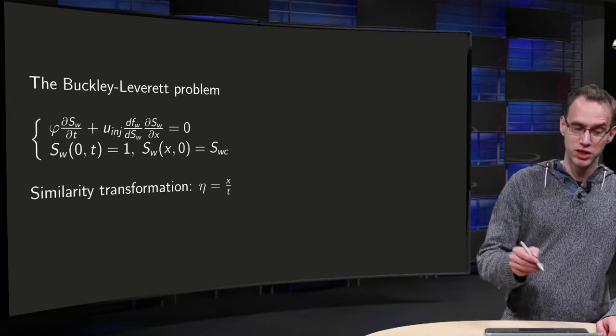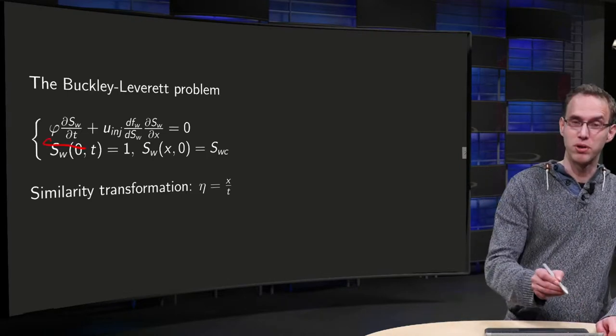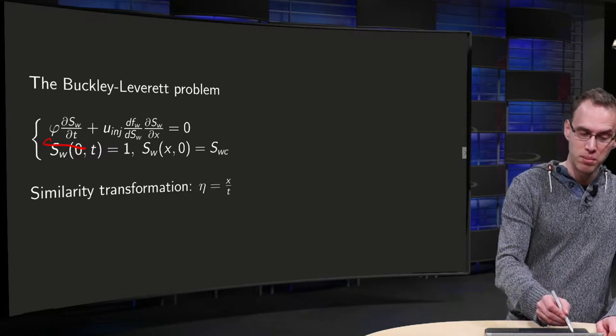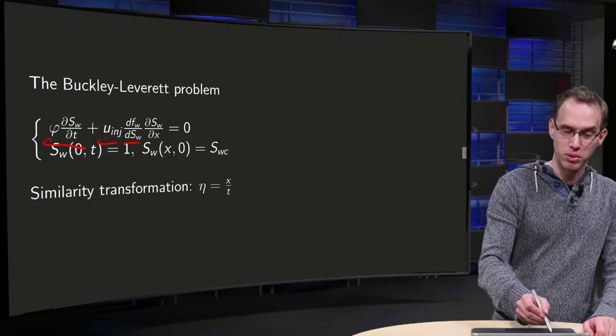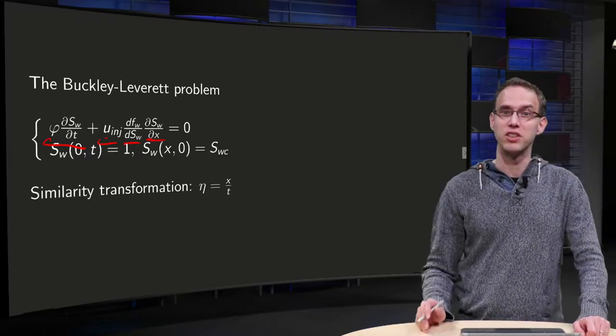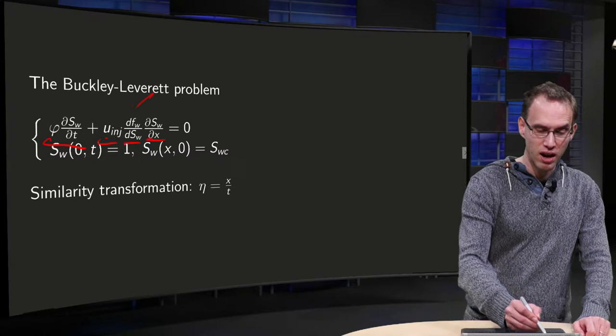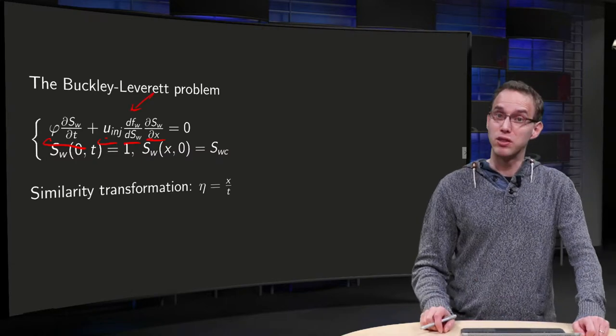We have our conservation law: φ porosity times ∂Sw/∂t plus constant u injection times dfw/dSw times ∂Sw/∂x equals 0, where this fw is given in terms of Sw.